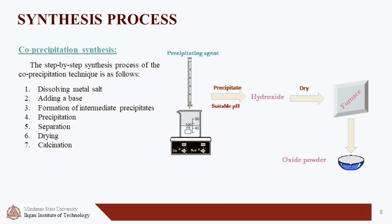Precipitation: the base acts as a precipitant agent, causing the formation of precipitates in the solution. Separation: separate the precipitates from the solution, typically by filtration or centrifugation. Drying: dry the precipitates to remove any remaining solvent. And lastly, calcination: heat the dried precipitates to convert them into the desired oxide material, maintaining chemical homogeneity.